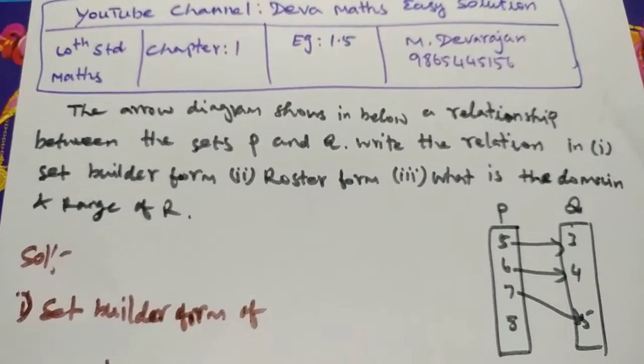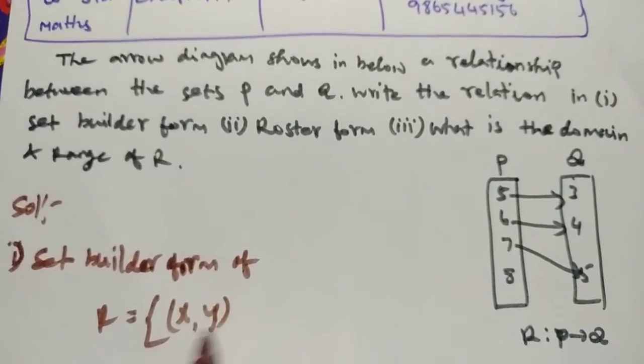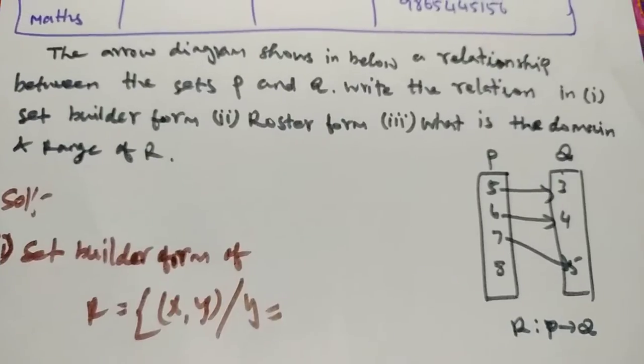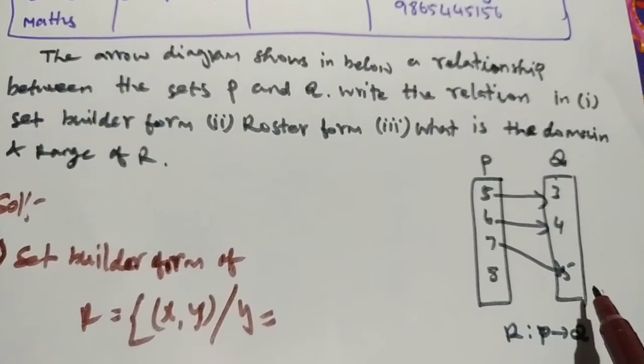Set builder form: R equals the set of ordered pairs (x, y) such that y equals... where x is in the domain and y is in the range.